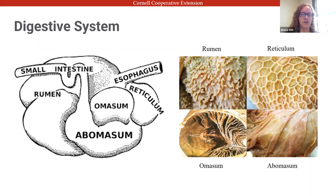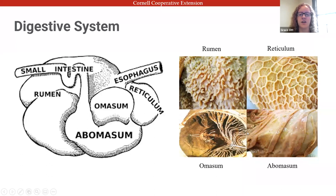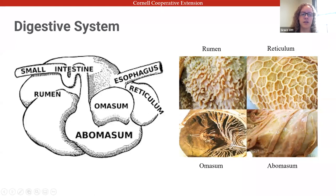When raising ruminants it's really important to understand how their digestive system works, as that forms the basis of their entire nutrition program. Ruminants have a four-compartment stomach. Sheep and goats don't have upper front teeth, so they use their tongues and lips to rip off plants and swallow them without chewing. Microbes in the rumen break down the feedstuff, and then the animal regurgitates it and chews it with their molars — this is called 'chewing the cud.'